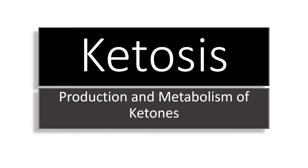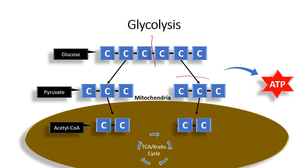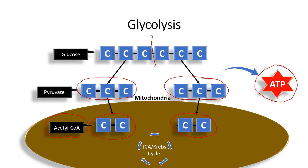Understanding ketosis requires us to understand a little about basic metabolism, so that's where we'll start. This is glycolysis — this is where we metabolize glucose. We start with a molecule of glucose, which is a six-carbon compound. In glycolysis, we split this molecule of glucose in half and produce a couple of three-carbon molecules that get modified and metabolized further. In the end, we produce two of these two-carbon molecules called acetyl-CoA. Along the way, we produce something called ATP, or adenosine triphosphate.